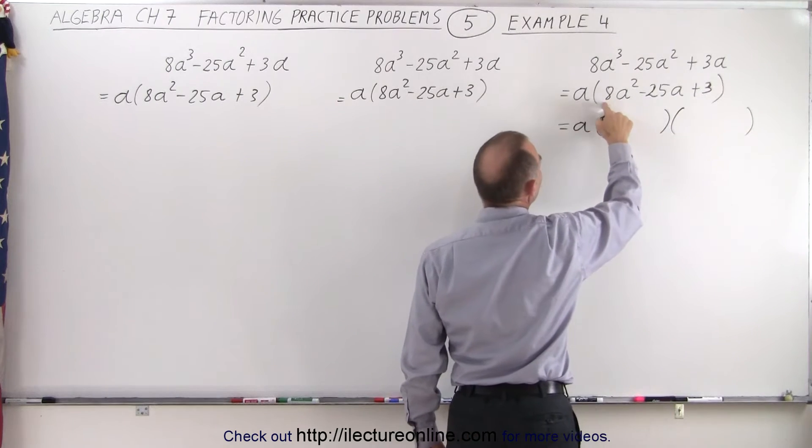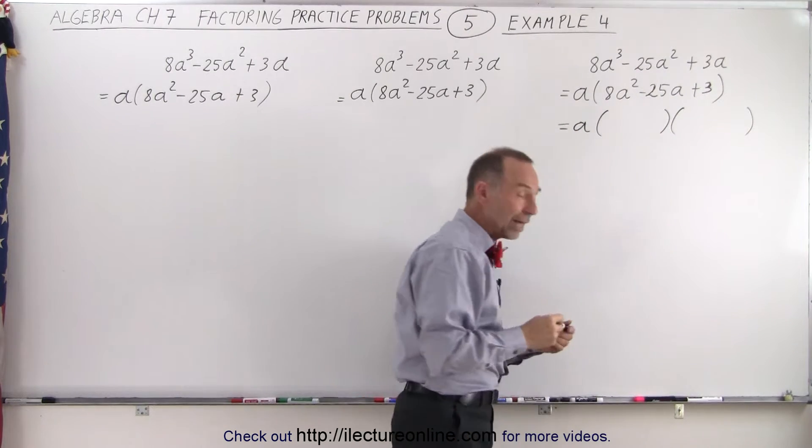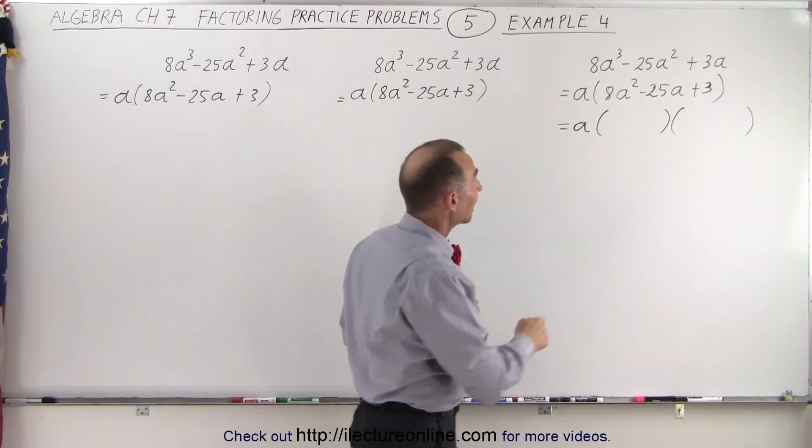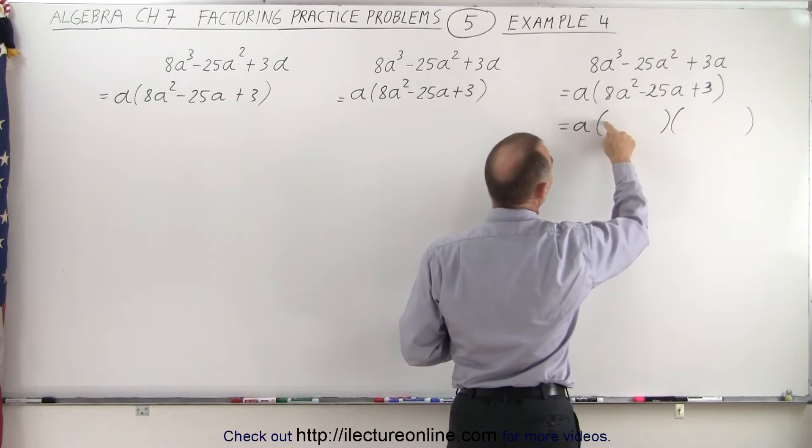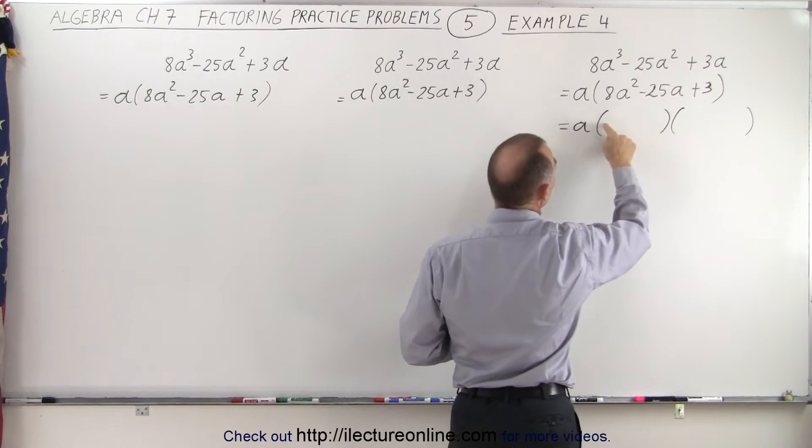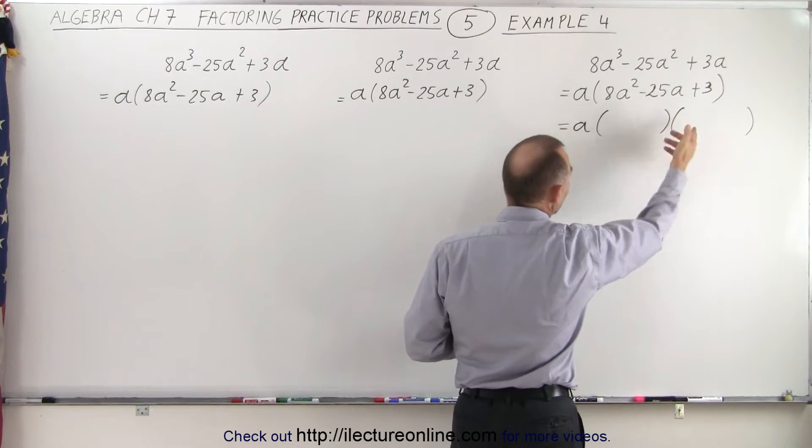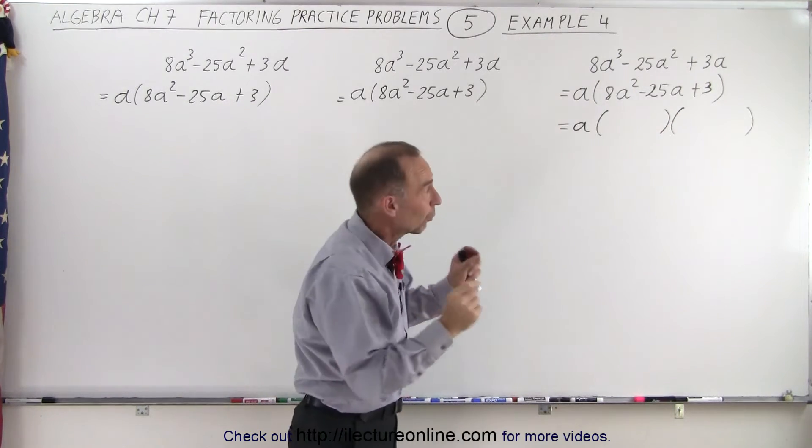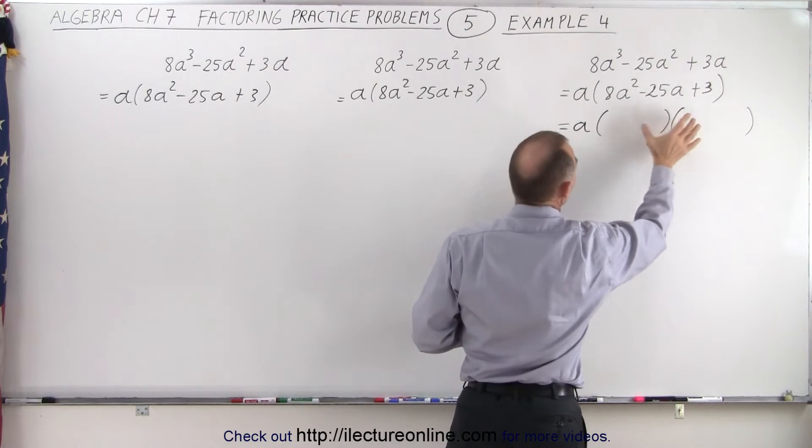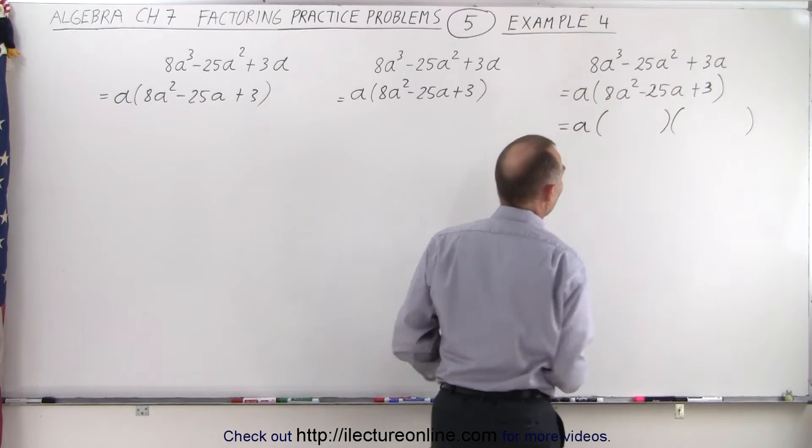But notice, to get 8a², we can do that in various ways. We can have 8a times a, or 4a times 2a, or 2a times 4a, or 1a times 8a. There's different ways in which we could write the first two terms in order when we multiply, we get the first term back.